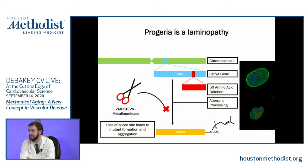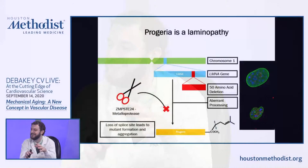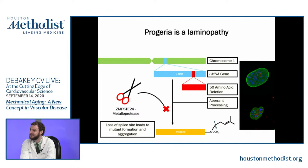Lamin A helps form and hold together the nucleus — it's part of the nuclear matrix. A lot of the shape of the nucleus comes from lamin A, and how lamin A interacts with forces around the cell. It's kind of like a mesh. When it's mutated in progeria, you end up getting this folded nucleus, and this folded nucleus introduces a large number of problems.